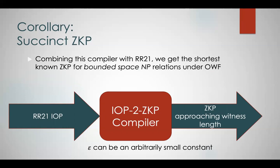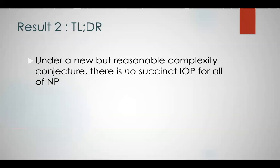This is a cool result: succinct IOPs imply succinct zero-knowledge proofs. So can we get a succinct IOP for all of NP? Revisiting that earlier question — as a second result, we show that under a new but reasonable complexity conjecture, there is no succinct IOP for all of NP.